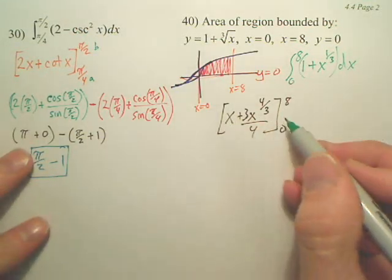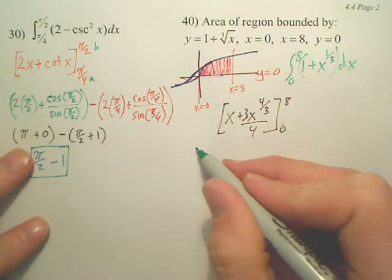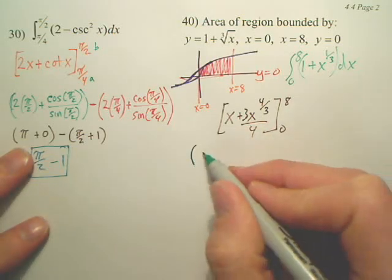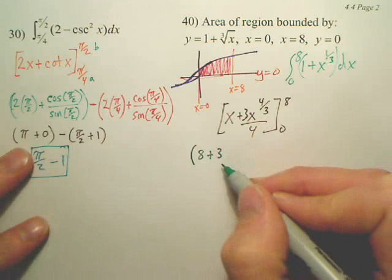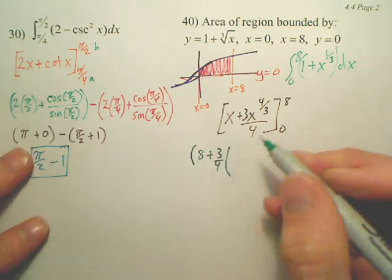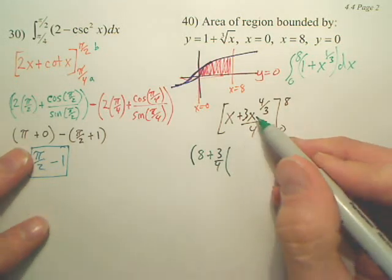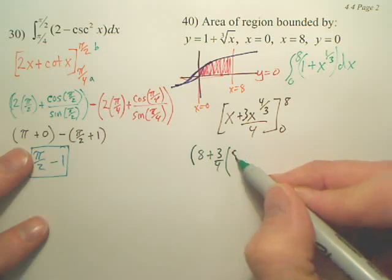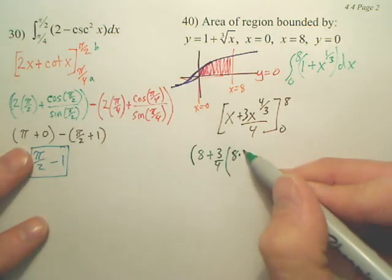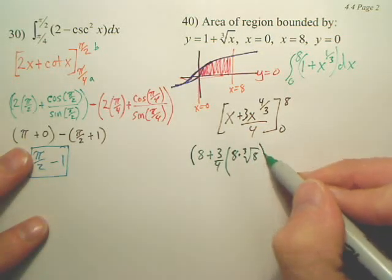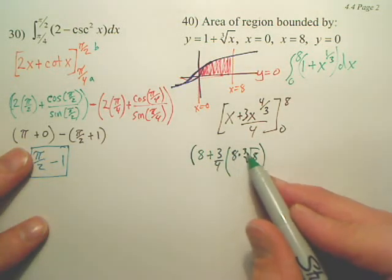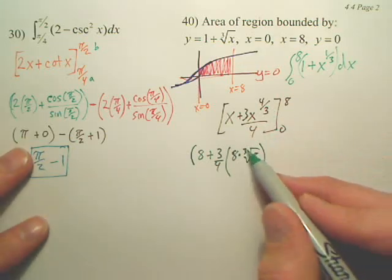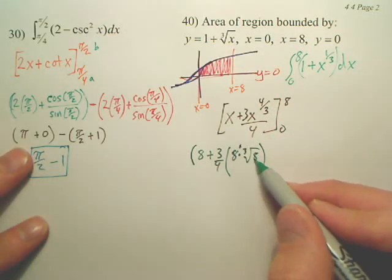So, we now plug in, which one first? 8. Don't make that mistake. So, 8 plus 3-fourths times. Now, do you understand x to the four-thirds means 8 times the cube root of 8? Isn't that 8 to the first times 8 to the one-third? Isn't this 1 and one-third? 8 to the first times 8 to the one-third?